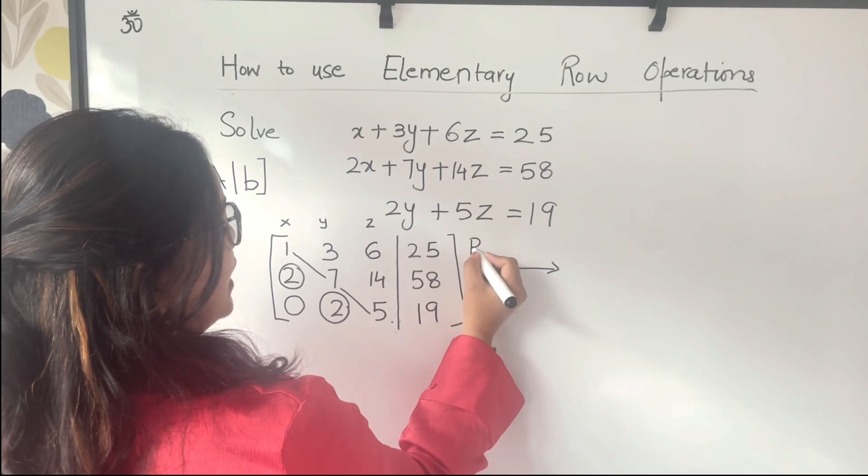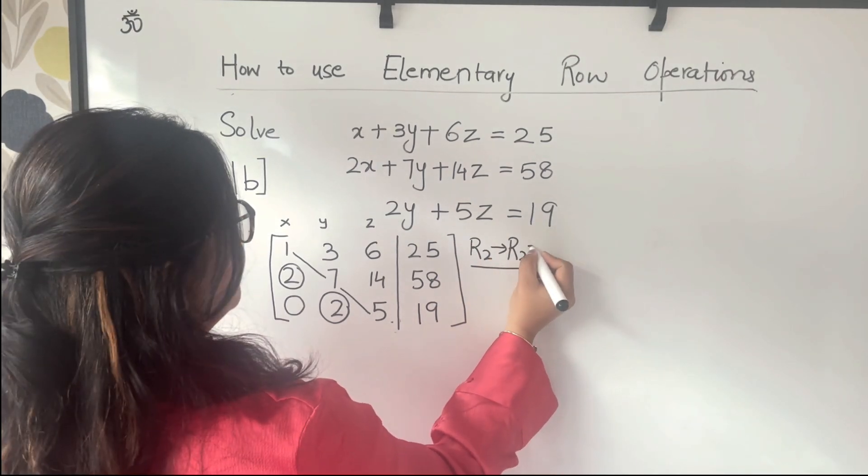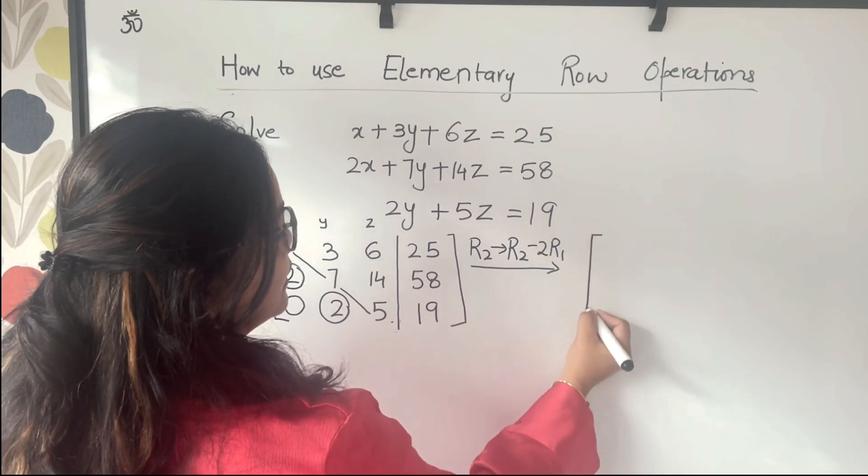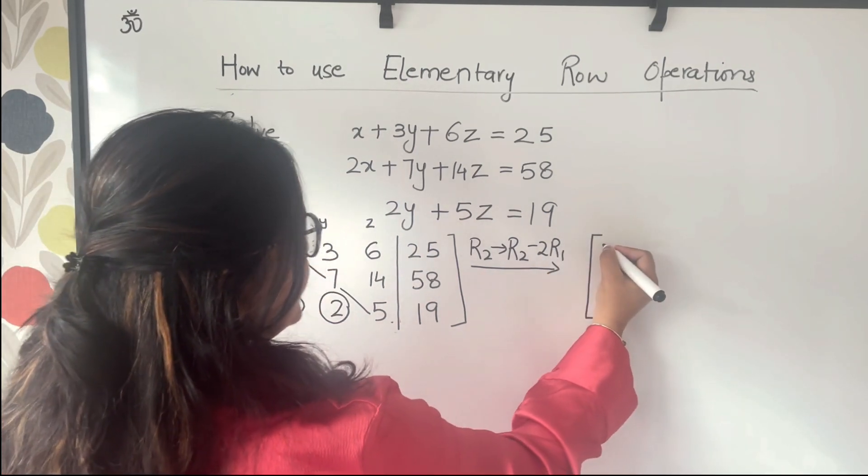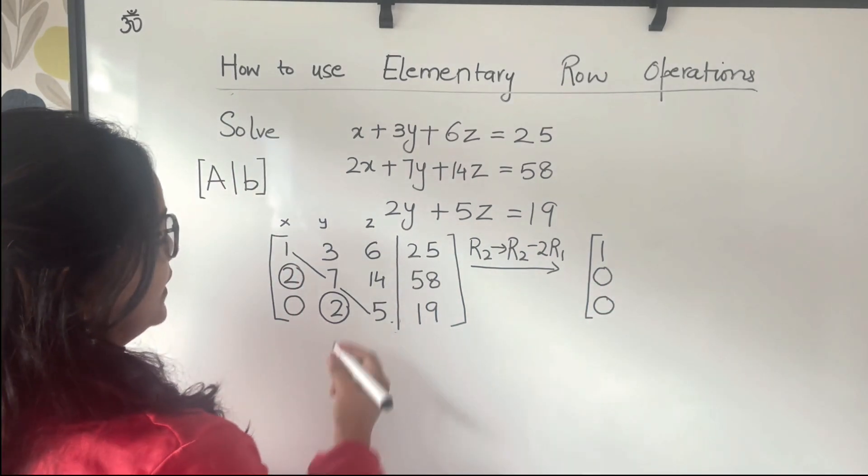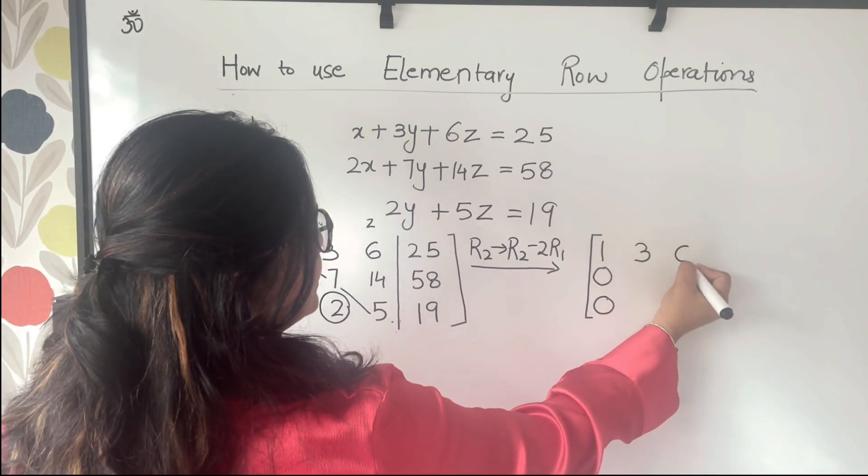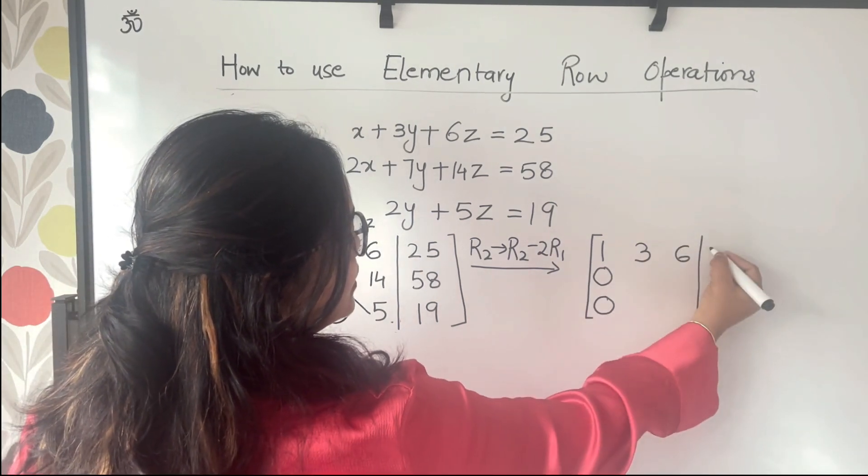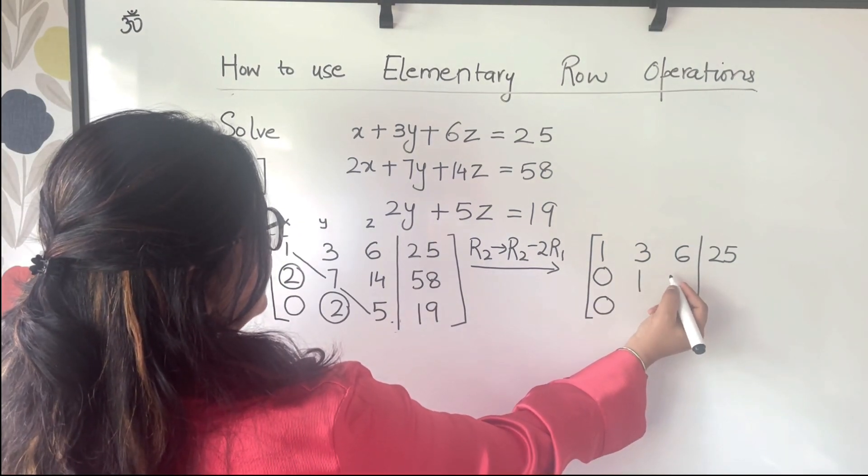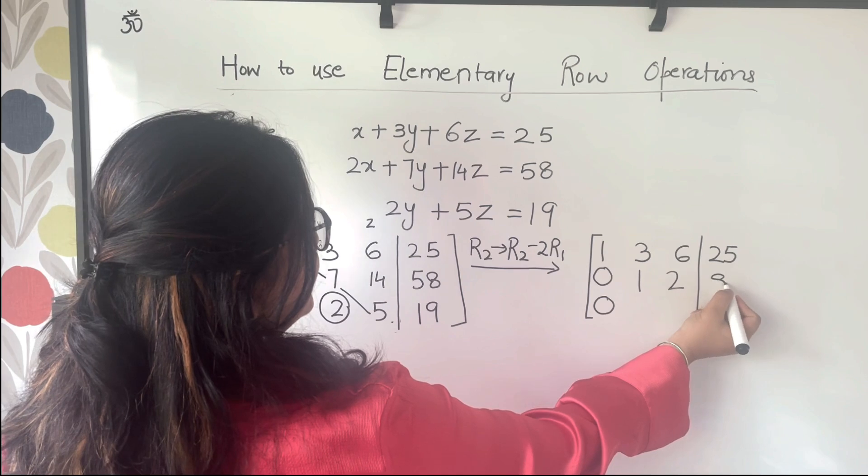The first row operation is R2 goes to R2 minus twice of R1, which results in 1, 0, 0. And here you will have 3, 6, 25 as it is. 1, 2, 8.